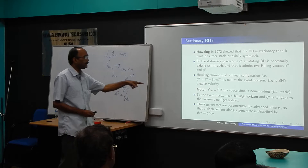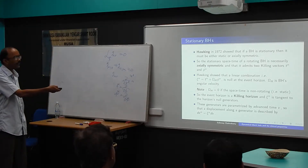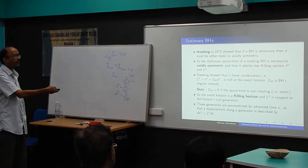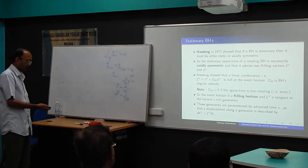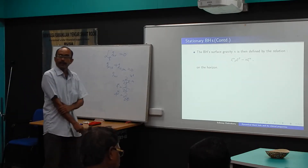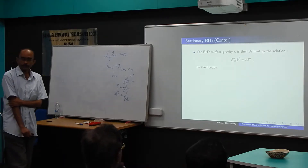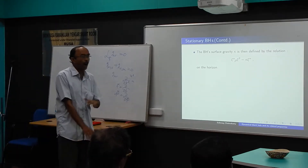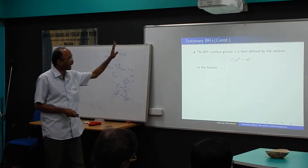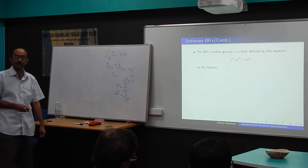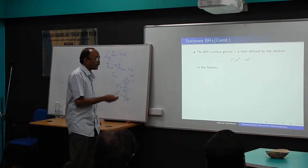If I consider these generators parametrized by the advanced time coordinate v, any displacement along a generator is characterized accordingly. Now I am talking about surface gravity. I will discuss how to derive it in the next lecture, but here I briefly introduce the concept in terms of the Killing vector ξ^α.